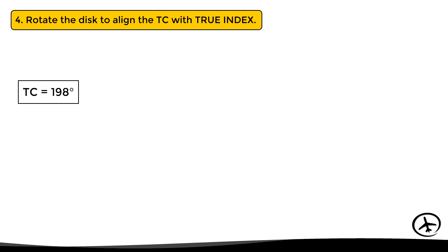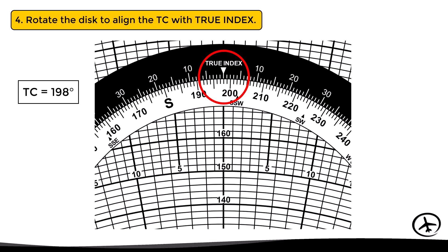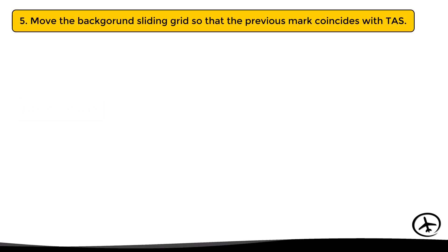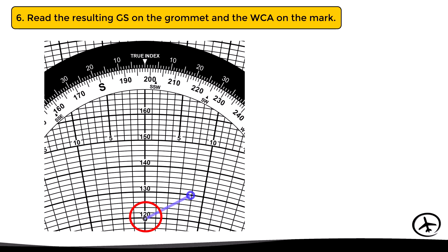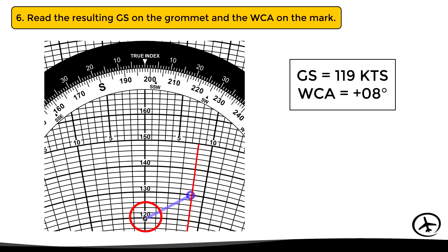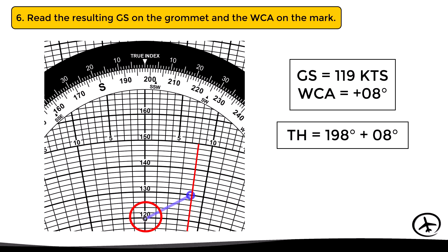Once this mark is made, we rotate the disk to align the true course, which in this case is 198, with the true index. Then we move the background sliding grid so that the mark coincides with the true airspeed of 130 knots. Finally, we read the resulting ground speed on the grommet, which in this case is 119 knots, and the wind correction angle on the mark, which coincides with the line of 8 degrees to the right. Wind correction lines to the right of the grommet are positive and those to the left are negative, so the wind correction angle is plus 8 degrees. Adding this to the true course of 198 gives a true heading of 206 degrees.